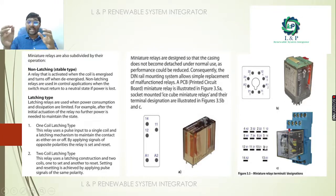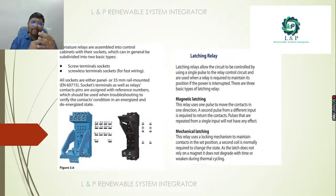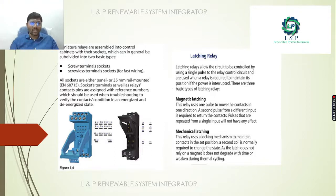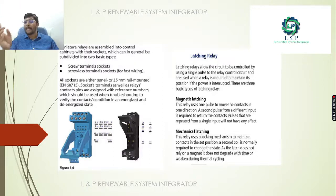These are the miniature relays and their terminal designations. These miniature relays are assembled in a control cabinet with their sockets, available in two basic types: screw terminal socket or screwless terminal socket for fast wiring. For latching of relays, we also have two basic types: magnetic latching and mechanical latching.